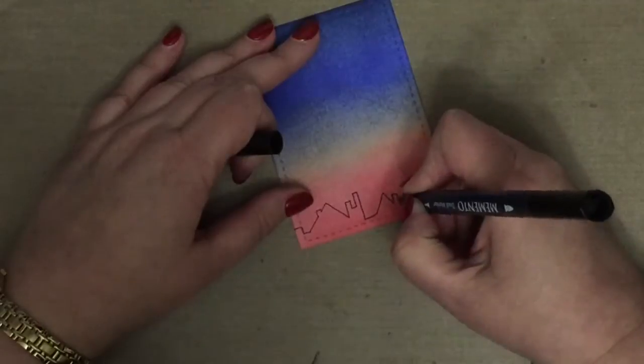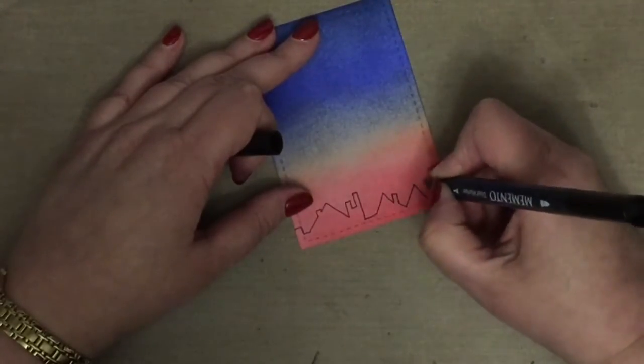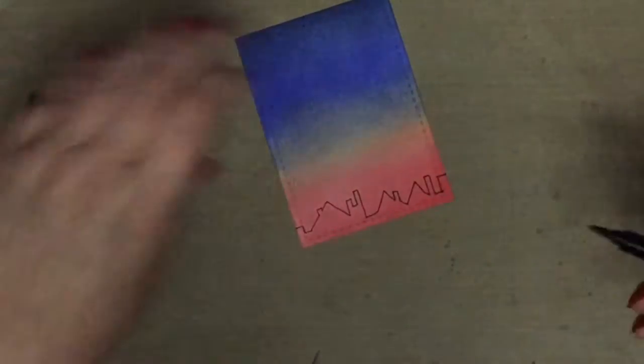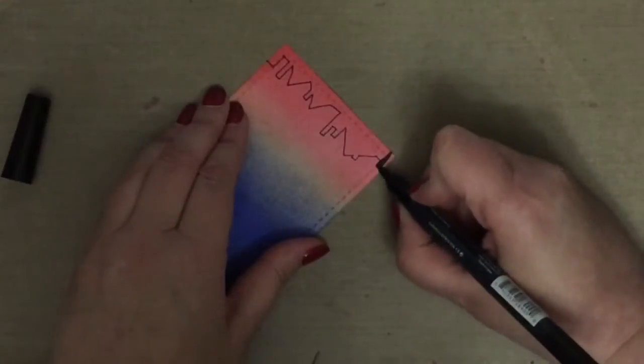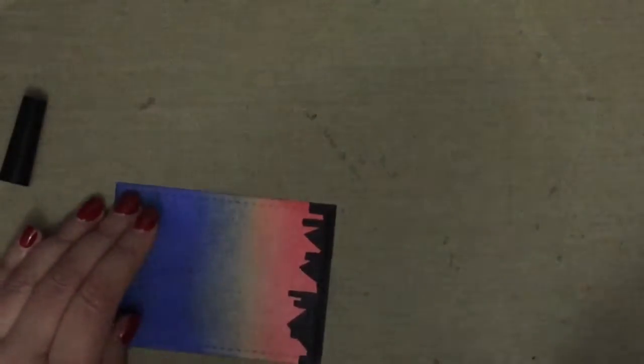I just started drawing some slanted roofs, some chimneys going up and down just to see what I could come up with. Then I started filling it in with the brush tip end of the Memento marker to make it look like a silhouette.